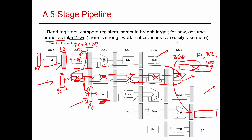Even with the aggressive assumption of a branch finishing in the second cycle, a taken branch still causes one stall cycle because a wrong instruction was fetched. If the branch had taken four cycles to resolve, we'd be looking at three stall cycles between useful instructions. To minimize stall cycles, I made this aggressive assumption that a branch gets resolved as early as the second stage.